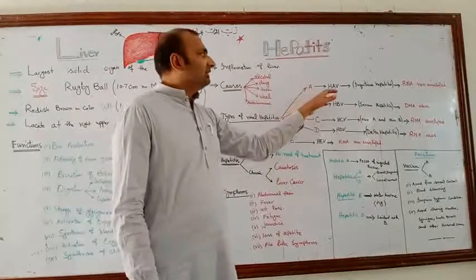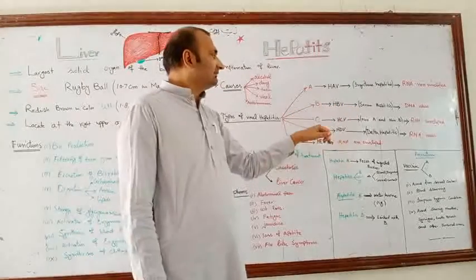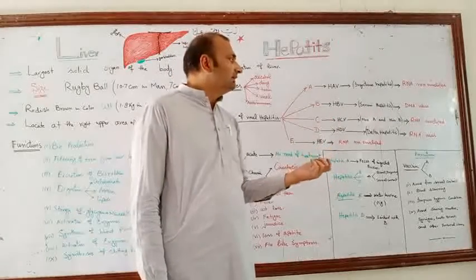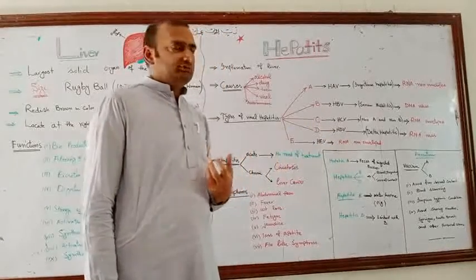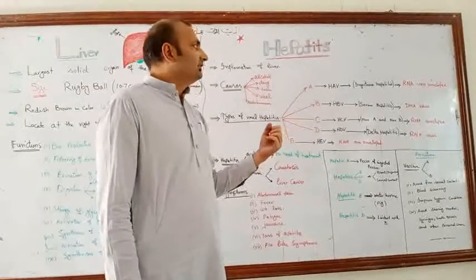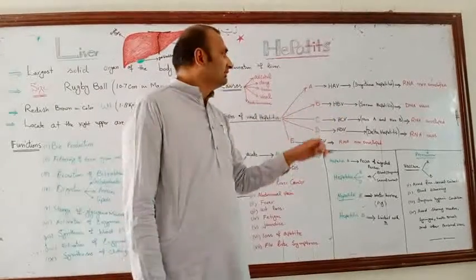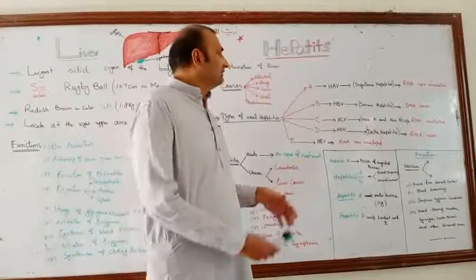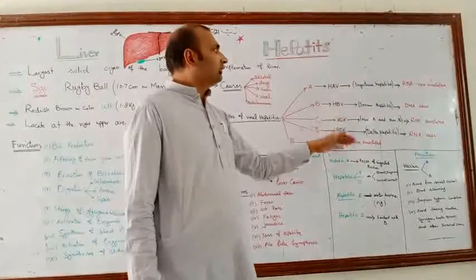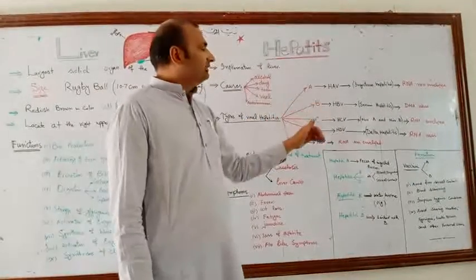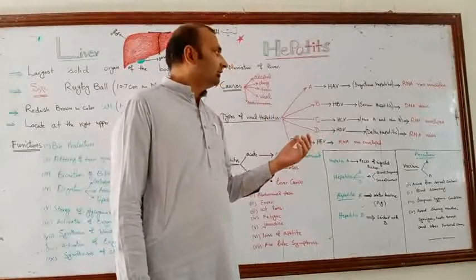Hepatitis A is also called infectious hepatitis. In terms of structure, hepatitis A and E consist of RNA non-enveloped viruses, hepatitis B consists of DNA enveloped virus, hepatitis C consists of RNA enveloped virus, and hepatitis D consists of RNA virus. Hepatitis B, C, and D are the most crucial, as many people are affected by these types.